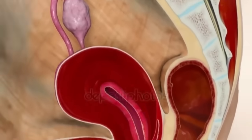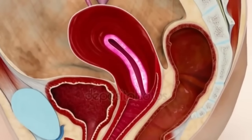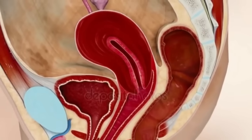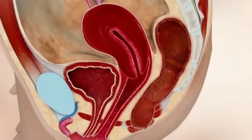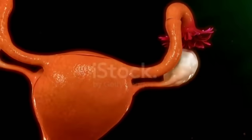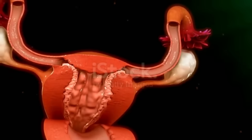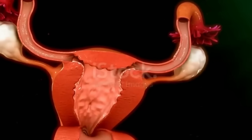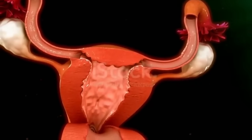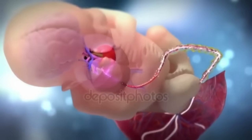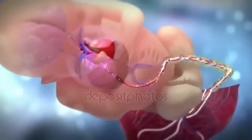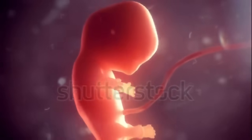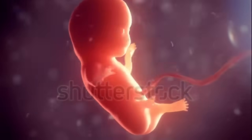Uterus. The uterus or womb is the major female reproductive organ of humans. One end, the cervix, opens into the vagina, while the other is connected on both sides to the fallopian tubes. The uterus is a pear-shaped muscular organ whose major function is to accept a fertilized ovum, which becomes implanted into the endometrium and derives nourishment from blood vessels which develop exclusively for this purpose. The fertilized ovum becomes an embryo, develops into a fetus, and gestates until childbirth.